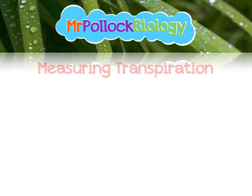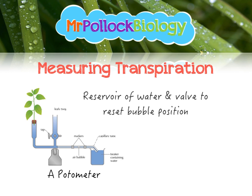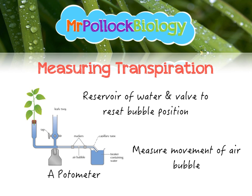Moving on, we can look at how we measure the rate of transpiration using a piece of equipment called a potometer. It's a relatively simple piece of apparatus — we look at how far an air bubble moves, and that tells us the volume of water that has been transpired through the plant. We've got a reservoir of water and a valve to reset the bubble position.